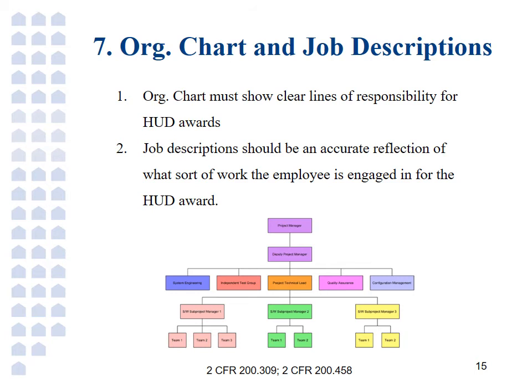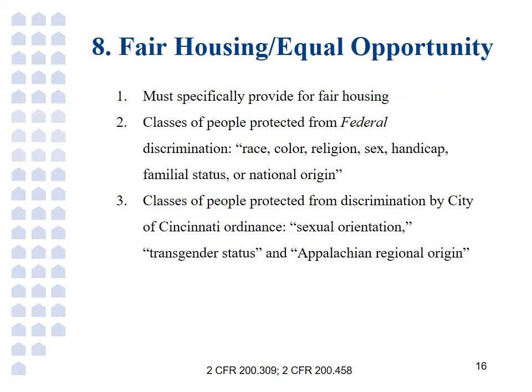Protection from housing discrimination is of vital importance. There are certain groups of people that are protected from discrimination by law, and this must be reflected in your fair housing policy. You should have a fair housing policy or similar policy that provides specifically for non-discrimination in housing. Many organizations have non-discrimination policies, but these are often specific to employment discrimination rather than housing discrimination. I have included here a list of those classes of people protected from housing discrimination by federal law. However, I must note that the City of Cincinnati also offers anti-housing discrimination protection for other classes of people, namely sexual orientation, transgender status, and Appalachian regional origin. Anyone providing or facilitating housing in the City of Cincinnati should have these protections codified in their fair housing policy.